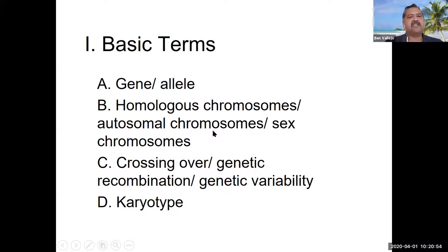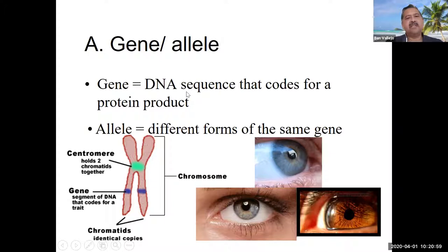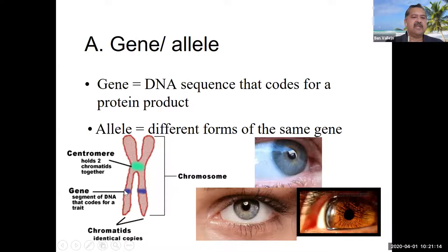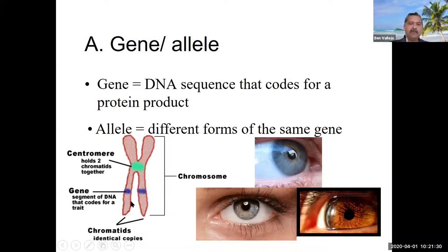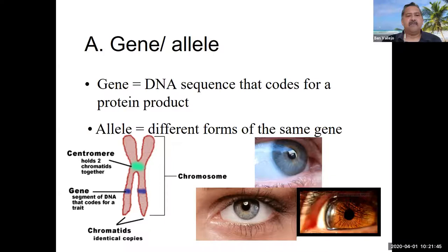Let's look at four sets of terms. We have a gene and an allele. A gene is a DNA sequence that codes for a protein product. If you look at this chromosome — a duplicated chromosome of two chromatids — the gene is a segment of DNA that codes for a trait. An allele is a different form of the same gene. You can see different eye colors here, but they're due to the same gene; you just have different copies, different alleles.